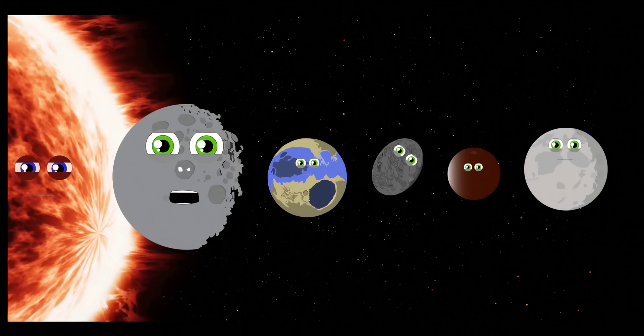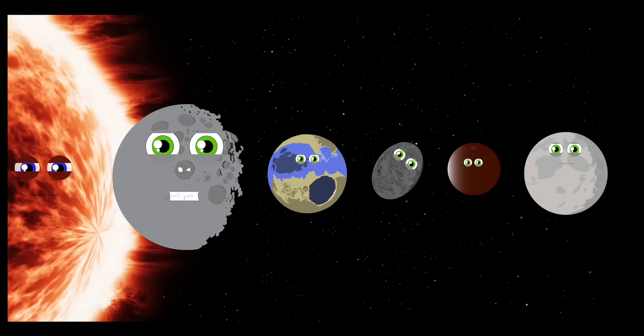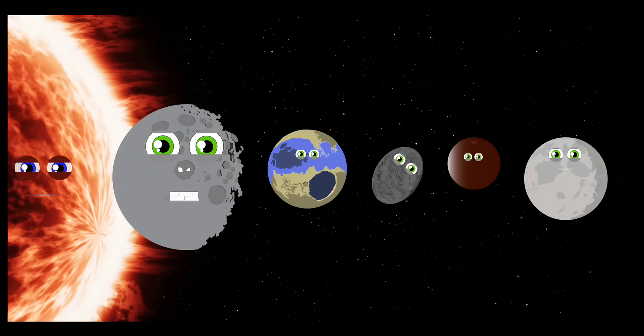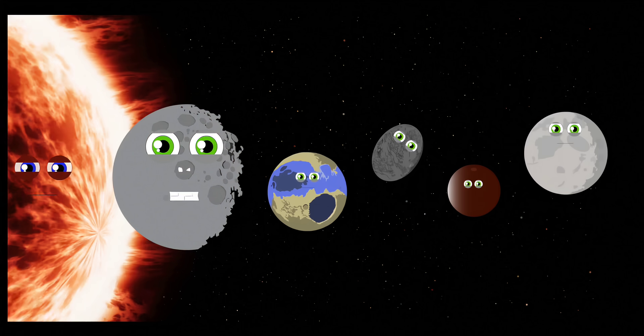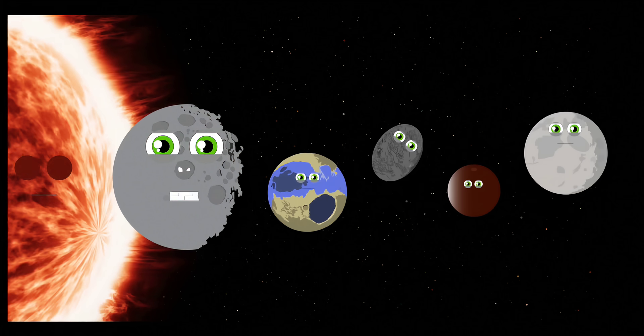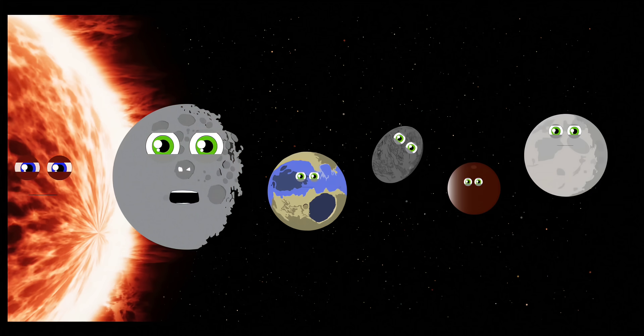My name is Ceres and I am a dwarf planet. I'm the closest dwarf to the sun. There's mysterious white spots on my rocky surface and I am the smallest one.